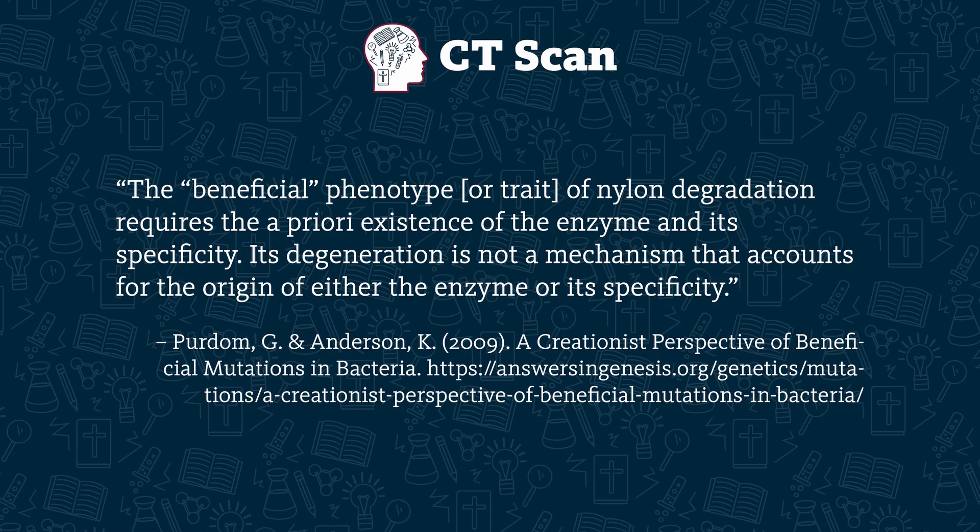Process 3 involves the degeneration of existing information. For instance, some bacteria have proteins that digest nylon. Since nylon is a human-made material which hasn't been around as long as the bacteria, this is considered great evidence for evolution. But a little deeper look at observational science, through a linked paper, explains why: the bacteria didn't evolve a new gene for a new protein. They already had genetic information to make proteins that digest carboxyl esters, which are similar to nylon. But mutations deformed the proteins to lose their specificity for carboxyl esters, making them able to digest nylon too. As Drs. Georgia Purdom and Kevin Anderson explained, the beneficial phenotype of nylon degradation requires the a priori existence of the enzyme and its specificity — its degeneration is not a mechanism that accounts for the origin of either the enzyme or its specificity.